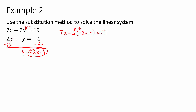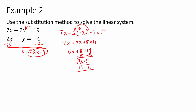Now we follow the same steps as before: distribute, add like terms, then subtract and divide. As we practice problems like these, it should start to feel repetitive — and that's actually a good sign, because once it seems repetitive it means we've got the steps down and can go faster. We take x equals 1 and plug it back in to solve for y using the equation y equals negative 2x minus 4. Negative 2 times 1 is negative 2, and negative 2 minus 4 is negative 6.